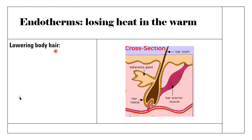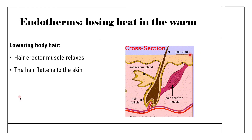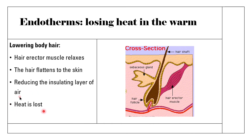Another way to lose heat in the warm is by lowering body hairs — the opposite of raising them in the cold. The hair erector muscle relaxes, so the hair flattens to the skin. This reduces the insulating layer of air. When we wanted to conserve heat, the muscle contracted to keep hairs upright, trapping insulating air. Now, with it warm, the muscle relaxes so that hair is flattened and heat is lost more easily.